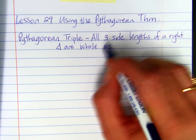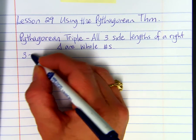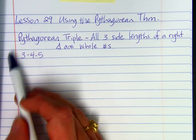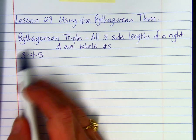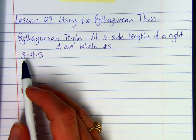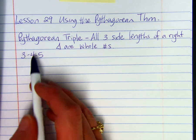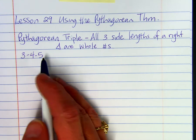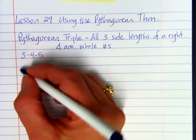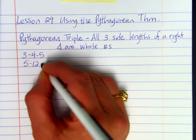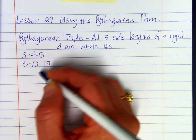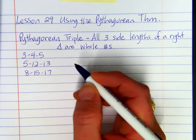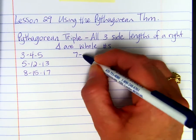Some examples would be 3, 4, 5. When we write our triples, we put the leg lengths first and the hypotenuse last, so the biggest number should always be last. 5, 12, 13 is a triple. 8, 15, 17 is also a triple.